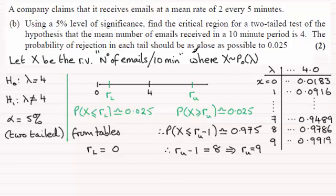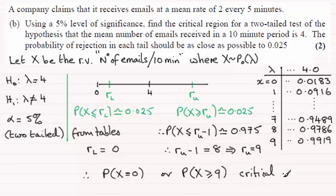So in answer to the question, we've got to find the critical region. So those critical regions are going to be that X, the probability that X is equal to zero, or the probability that our random variable X is greater than or equal to nine. They're going to be the critical regions. Okay, so just finish that off there, critical regions.